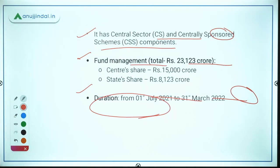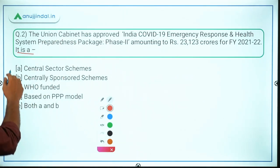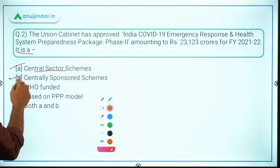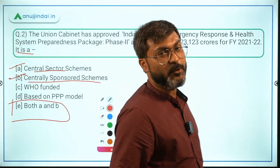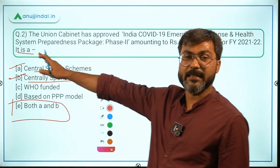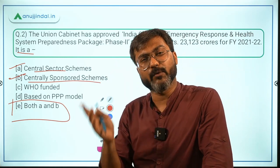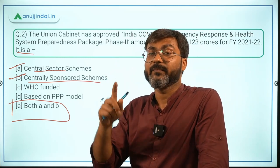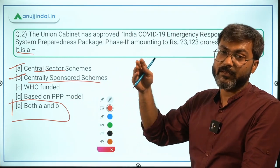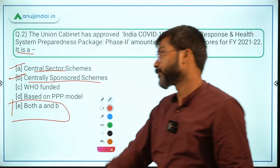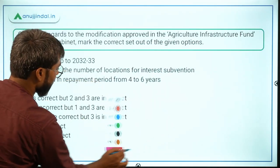Coming back to question 2: the package is both a Central Sector scheme and a Centrally Sponsored scheme, so the answer is Option E — Both A and B. Remember, phase 2 has both components, while phase 1 had only the Central Sector component, meaning phase 1 was completely funded by the central government.